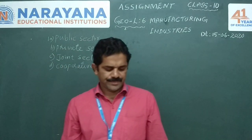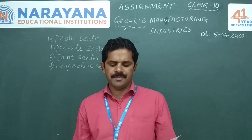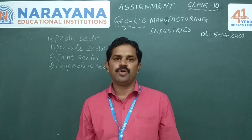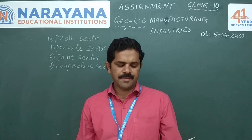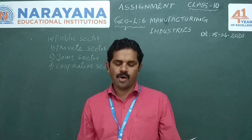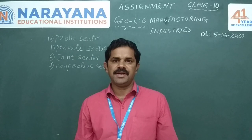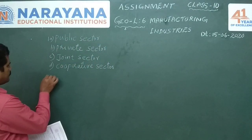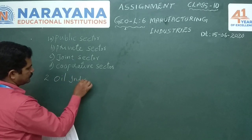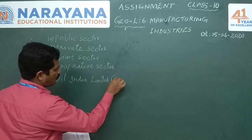Question No. 2: Name an industry that is run jointly by the state and individuals or a group of individuals. The answer is Oil India Limited, in short form O-I-L.